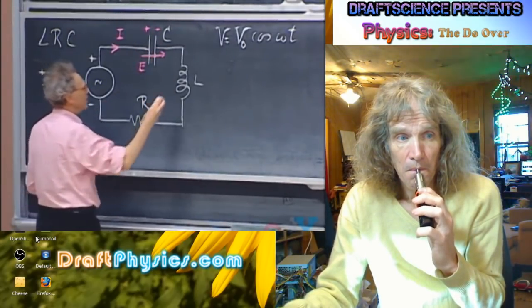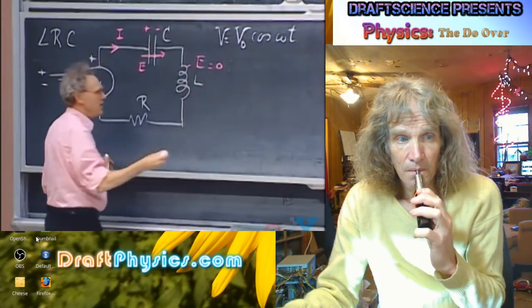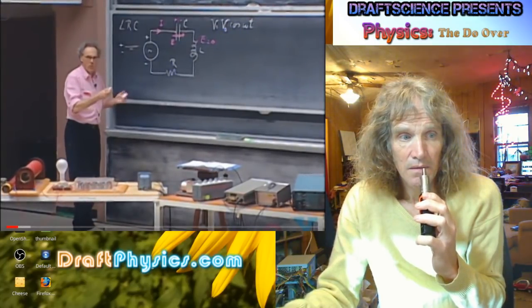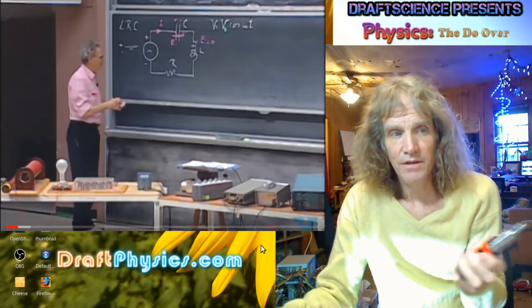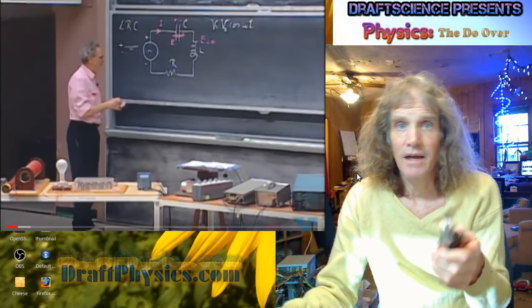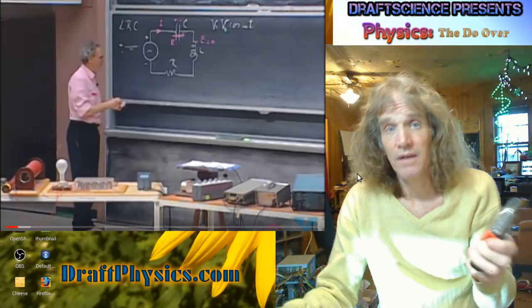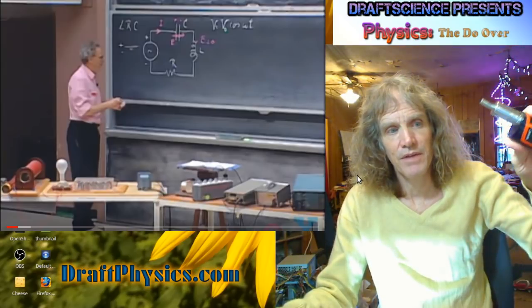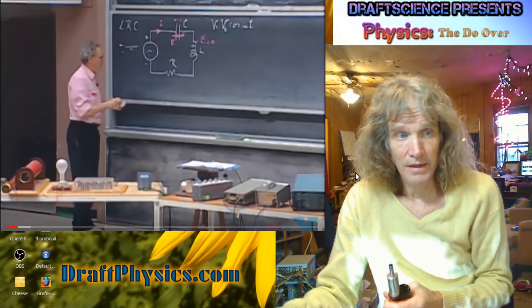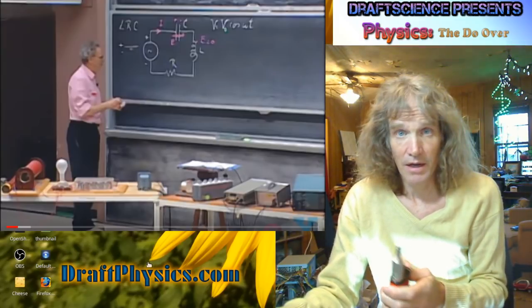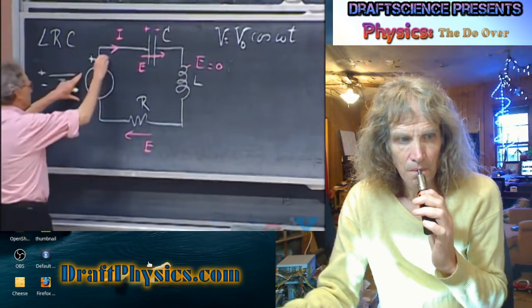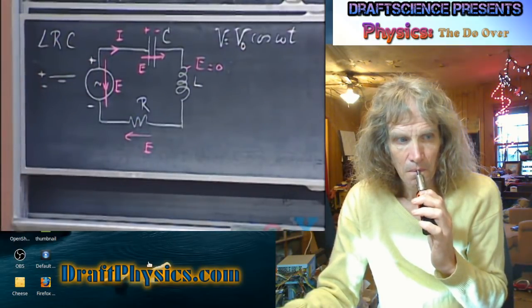The electric field inside the capacitor is in this direction. The electric field in the self-inductor is always zero, because the self-inductor has no resistance — there's no electric field inside it, no matter what some books want you to believe. The self-inductor acts as a resistor in the sense that it can take a very long time for the current to move through the coil. The electric field in the resistor is in this direction.